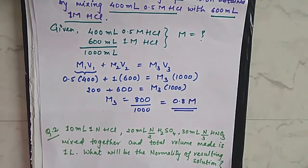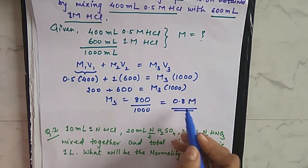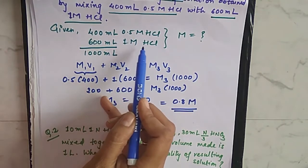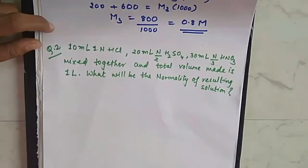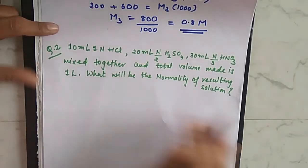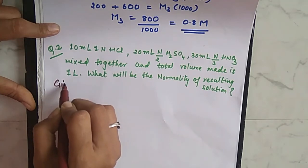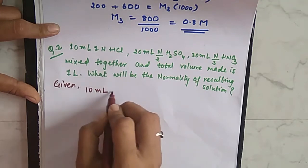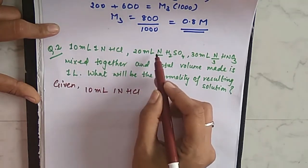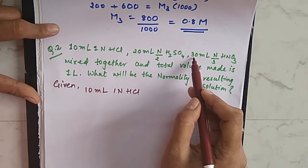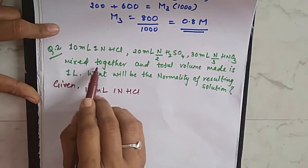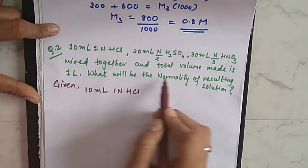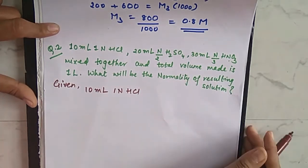The resulting solution has a concentration of 0.8 molar when 400 ml of 0.5 molar and 600 ml of 1 molar HCl are mixed. Now the second example: 10 ml of 1 normal HCl, 20 ml of N/2 H₂SO₄, and 30 ml of N/3 nitric acid are mixed together, and the total volume is made to 1 liter. What will be the normality of the resulting solution?